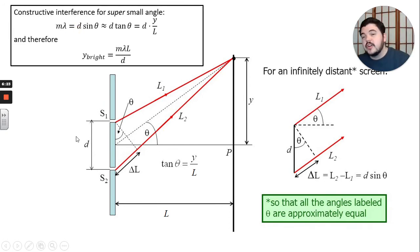So our constructive interference was m lambda equals d sine theta. For a super small angle, d sine theta is approximately the same as d tan theta and tangent theta is y over L. Rearranging this equation, we can see that bright spots, their vertical distance on the screen y here, that location for a bright spot is equal to m times the wavelength times the distance between the slits and the screen and divided by the slit separation distance.